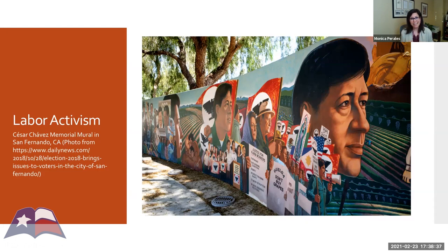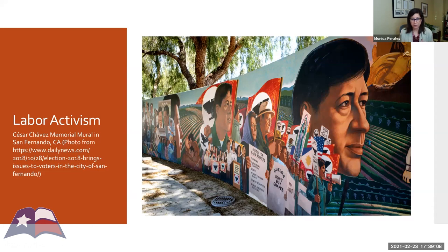Our document today is from this movement — from the march, the pilgrimage, from Delano to Sacramento in 1966, to draw attention to the plight of farm workers. When we break out into that session, I want us to focus on what the specific issues were that the authors of this document were raising, and how they were framing their fight for labor rights and really for civil rights.